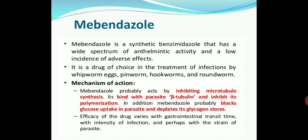The first drug is mebendazole. It is basically a synthetic benzimidazole with a wide spectrum of anthelmintic activity, and there are fewer chances of adverse effects. It is the drug of choice in treatment of infections generally for whipworm, pinworm, hookworm, and roundworm, except threadworm.